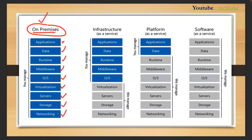For on-premises, companies need a network team, a storage team, an infrastructure team, admins, developers, and testers to develop applications. Admin teams install and manage software, the infrastructure team provides hardware, the network team manages the network, and the storage team handles storage backups and other things.